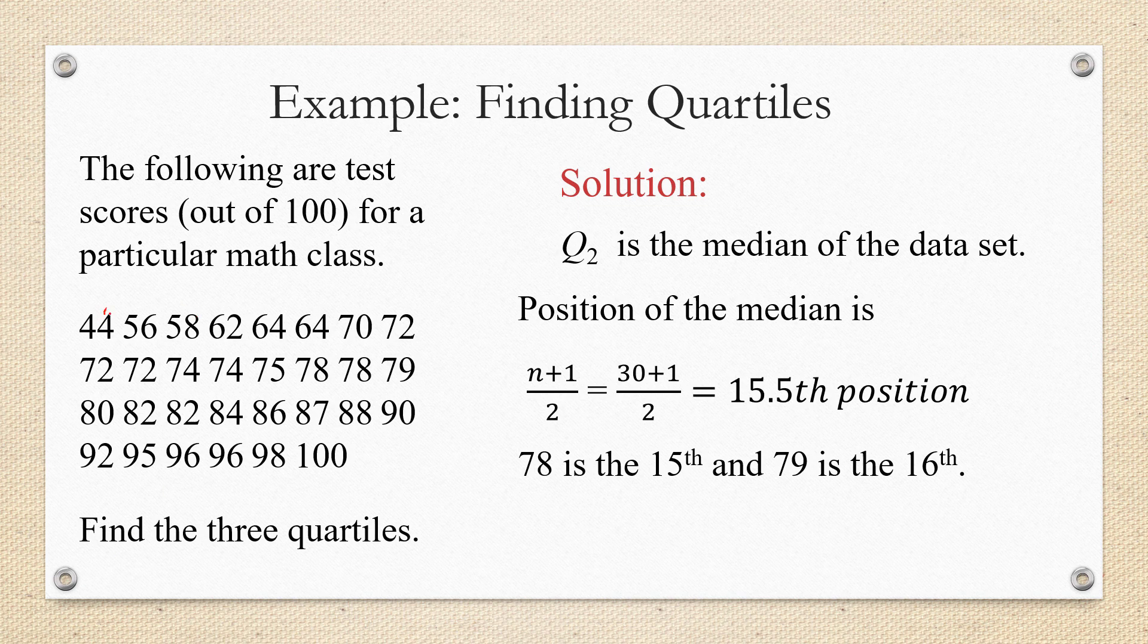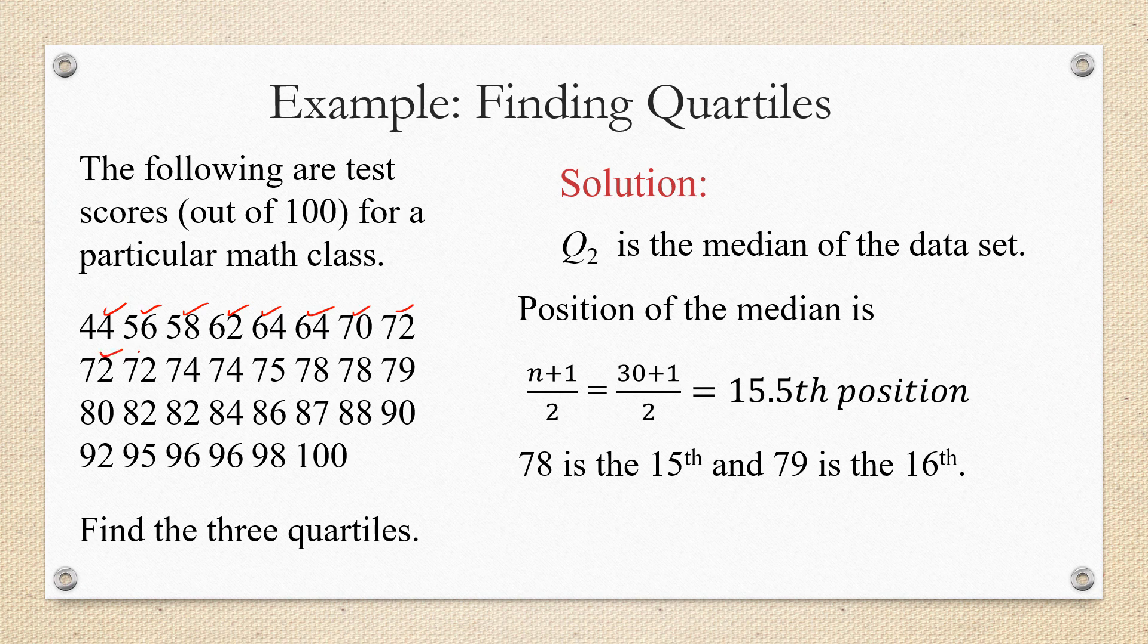This tells us that the median is between the 15th and the 16th positions. So we count 1, 2, 3, 4, 5, 6, 7, 8, 9, 10, 11, 12, 13, 14, 15, 16. Halfway in between 78 and 79 is the median.